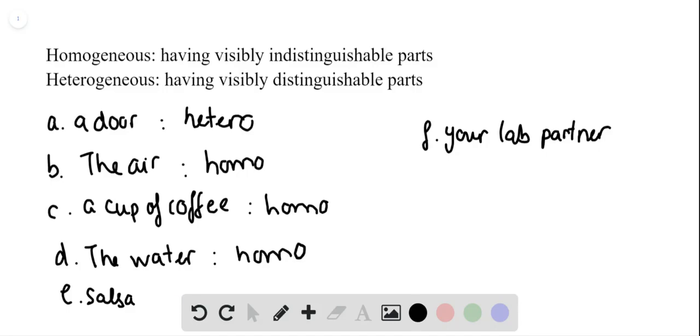Salsa is for sure heterogeneous because you can see chunks of tomatoes and limes... I'm sorry, not limes, but onions and so on. Your life partner is for sure heterogeneous. Yes. Thank you.